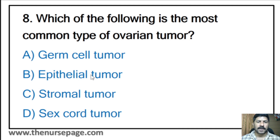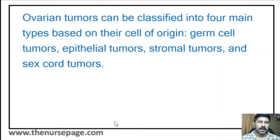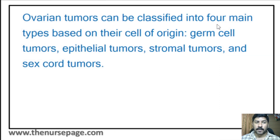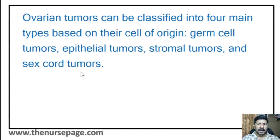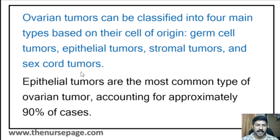Eighth question: Which of the following is the most common type of ovarian tumor? Germ cell tumor, epithelial tumor, stromal tumor, or sex cord tumor? The correct answer is epithelial tumor. Ovarian tumors are classified into four main types: germ cell tumors, epithelial tumors, stromal tumors, and sex cord tumors. Epithelial tumors are the most common, accounting for approximately 90% of cases.